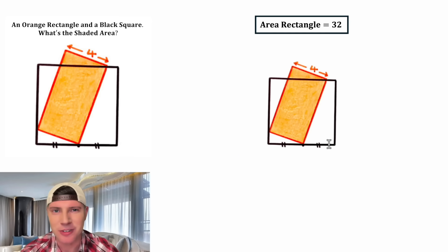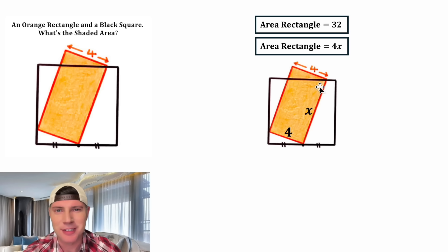But now I'm thinking we should do it the long way, the general case. Let's call the height of the rectangle x, and then the base of the rectangle is the same thing as the top, so it's also four. And now we can write a formula for the area of this rectangle: it's going to be 4 times x. And this also looks important. Let's put a box around it.